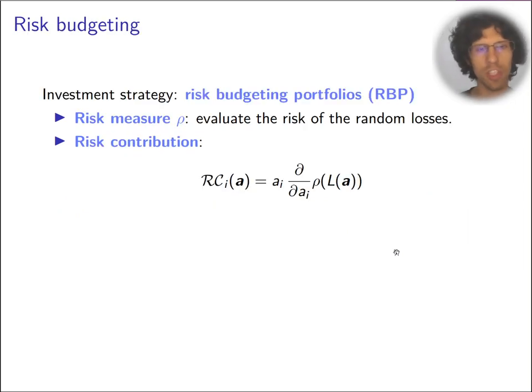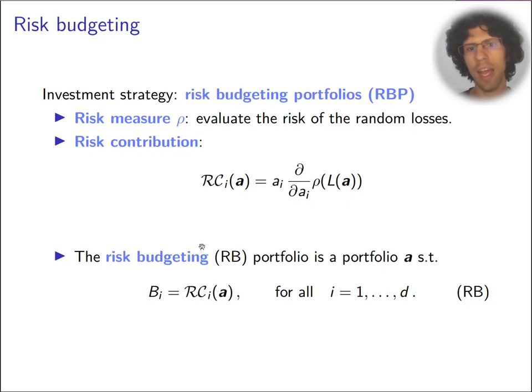The investment strategy that we're going to choose is called the risk budgeting portfolio. It takes a risk measure to evaluate the risk of the random losses of the portfolio, and the risk contribution is a marginal part weighted by how much we have invested in that asset. The risk budgeting portfolio assigns to each one of the assets how much risk we want invested into that.